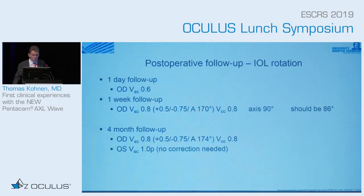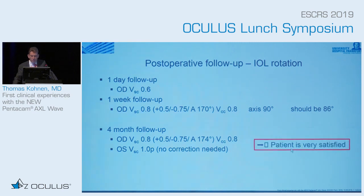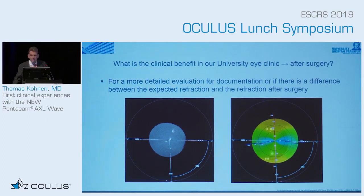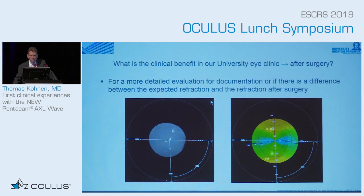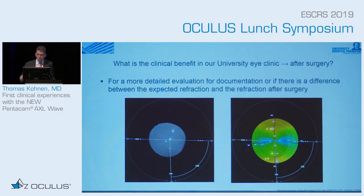We then performed the Berdahl-Hardten calculation and found that we had to rotate the lens. We did the rotation, and four months after surgery the patient came out with a very good result of 0.8 vision. The other eye was already very good from the beginning. The patient is satisfied. You can see this in the AXL Wave — with the clinical benefit after surgery, for a more detailed evaluation and documentation when there is a difference from expected refraction, the machine had precisely determined the axis both pre- and postoperatively.